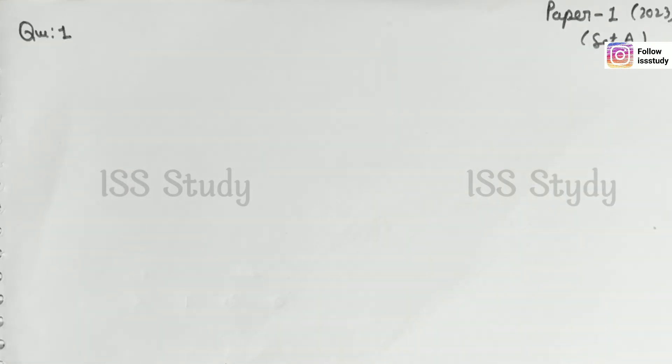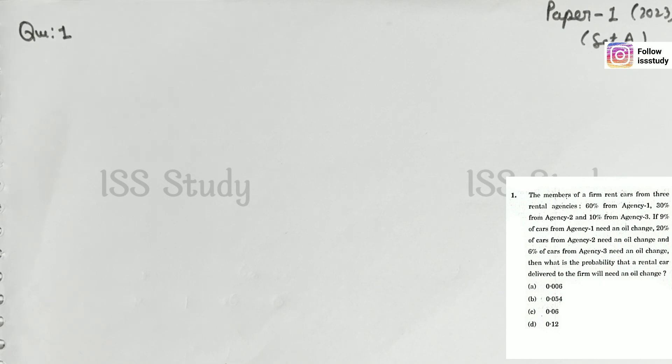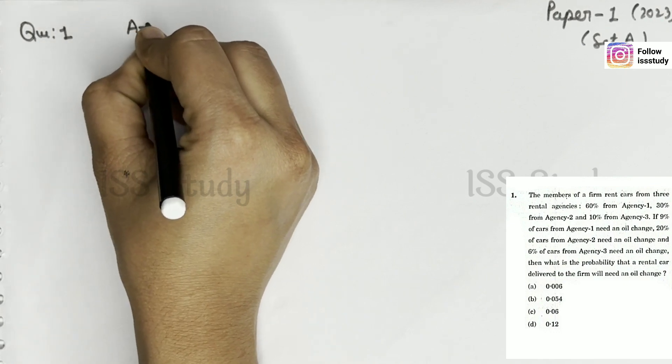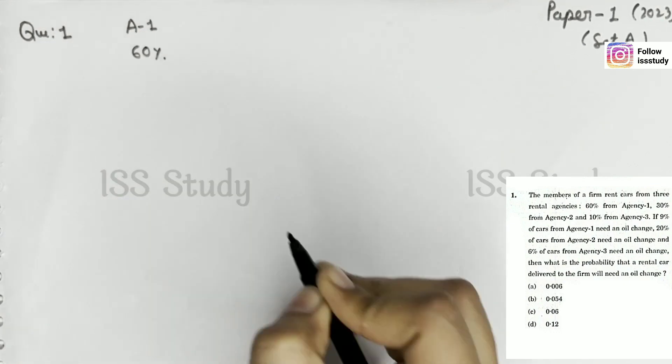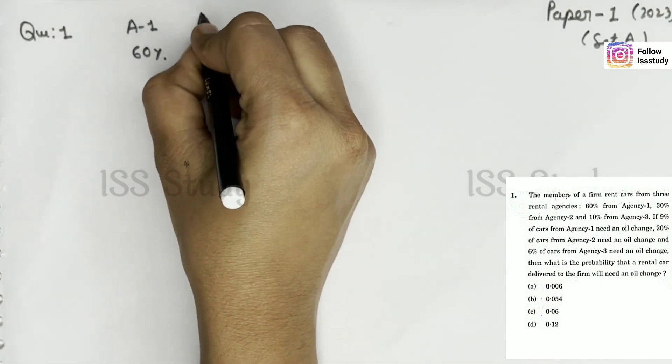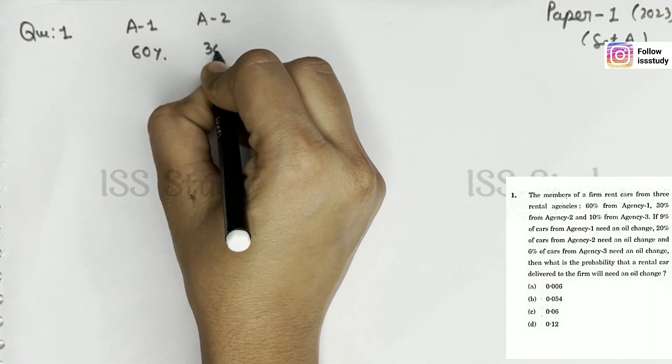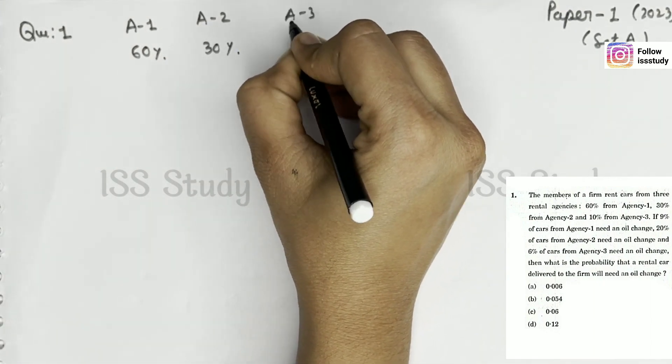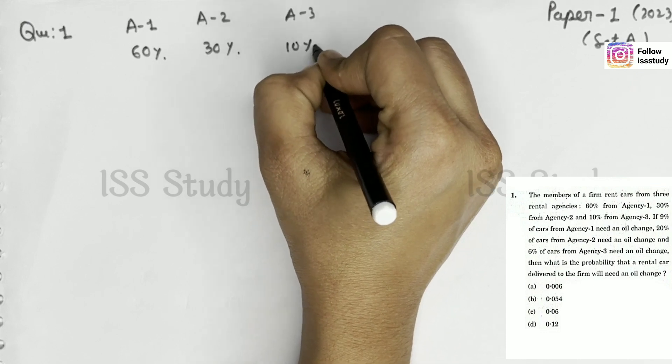So I'm going to read this question. This question says that the member of a firm rent cars from 3 rental agencies: 60% from agency 1, 30% from agency 2, and 10% from agency 3.